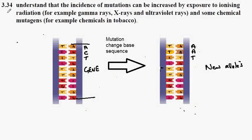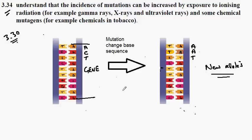My GCSE Biology Syllabus Statement 334, and we're looking here at the causes of mutation. Previously in 330, I discussed how a mutation is a change in the base sequence of the gene. So here we have the sequence ACT, and then the mutation is changed to AAT, and this is where new alleles are produced.